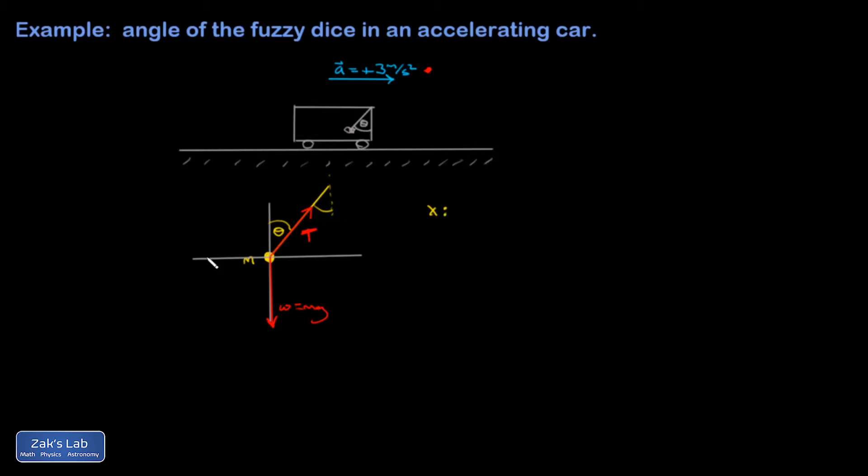I need to decompose this tension vector into components. This is one of those cases where the horizontal piece is given by the sine of the angle we labeled just because we labeled it with respect to the vertical. So I'm going to have a T sine theta for the length of this side of the triangle.